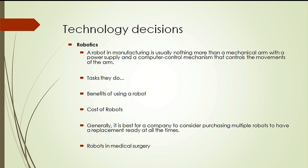A robot in manufacturing is usually a mechanical arm with a power supply and a computer control mechanism that controls the movement of the arm. The arm can be used for many tasks such as painting, welding, assembly, and loading and unloading of machines. Robots are excellent for physically dangerous jobs, such as working with radioactive or toxic materials. Robots can also work 24 hours a day to produce a highly consistent product.